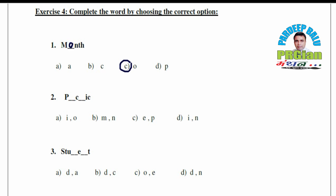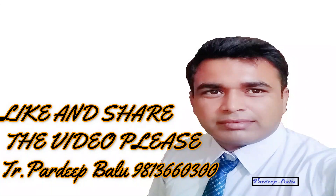Now look here — second point: P _ C _ _ I C. What will it form? P I C N I C — Picnic. So what was our option? I and N — Option D. Next: S T U _ _ _ T. What will it form? Student — S T U D E N T — Student. So what is our option? D and N — Option D.